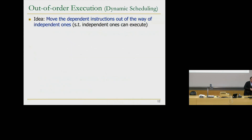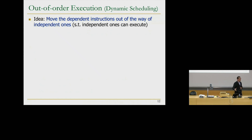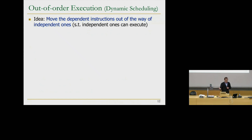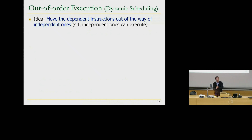So we're going to look at out-of-order execution, also called dynamic scheduling — not static scheduling. Static scheduling doesn't change; dynamic scheduling changes based on the availability of data. The key problem is: we have an instruction that cannot move because it's dependent on something else that's not ready yet. So what do we do? Move that instruction out of the way, so that independent instructions can go into the pipeline. It's a very simple idea.